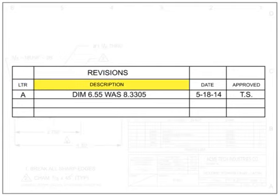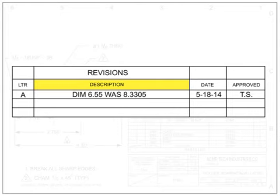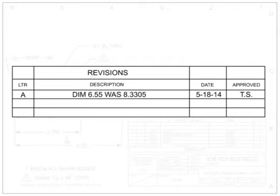The description area contains the general change information as well as what prompted the change. Documents that initiate drawing changes are called engineering orders, engineering change orders, or engineering change proposals. These documents are typically given a number and referenced in the description of the change on the drawing. The date and approved columns show when the change was made and who approved it, helping to track the history of changes. Other information sometimes contained in this area includes the zone where the change can be found, other signatures required to approve the change, and the serial number to indicate when the part change became effective.